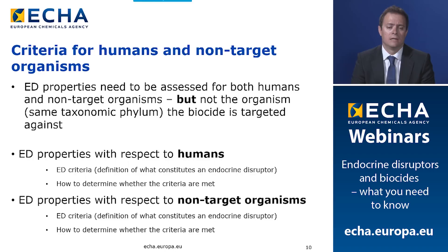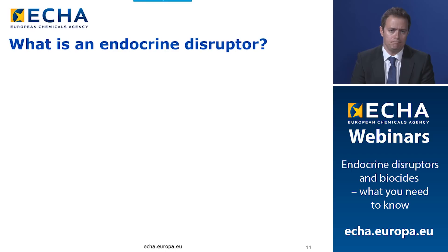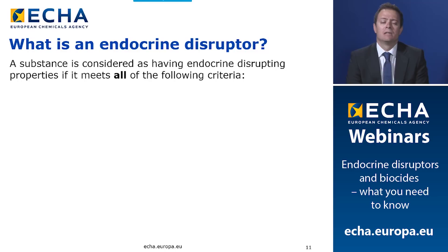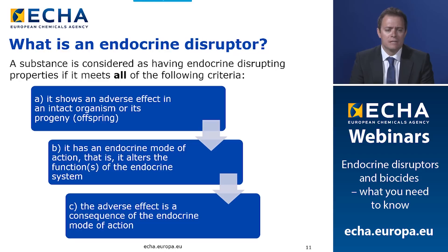What is an endocrine disruptor? A substance is considered to have endocrine disruption properties if it meets all of the following criteria: first, it shows an adverse effect in an intact organism or its progeny; second, it has an endocrine mode of action — meaning it alters the function of the endocrine system; and third, the adverse effect is a consequence of the endocrine mode of action.